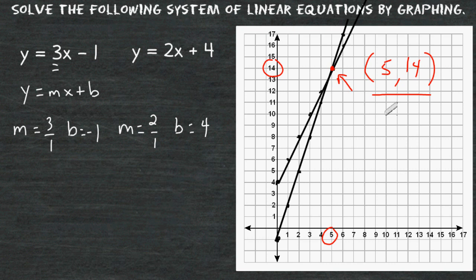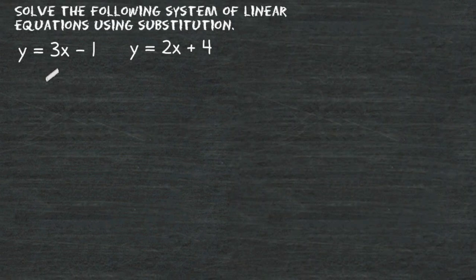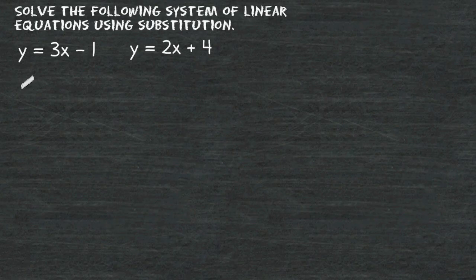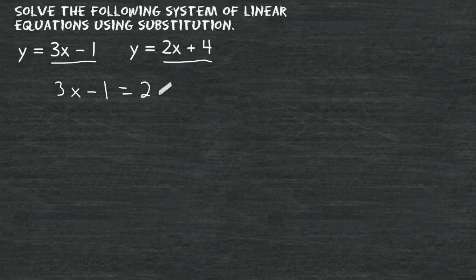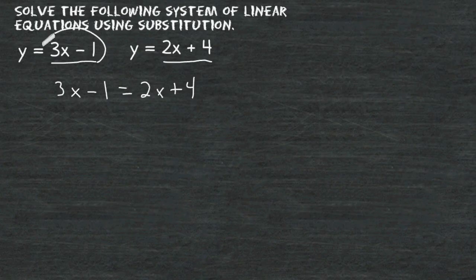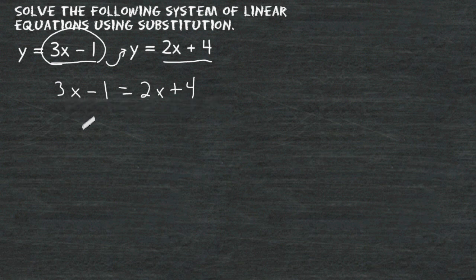Now let's try solving the same system of equations using the substitution method. When using substitution, what you want to do is isolate one of your variables. Notice that with both of these equations, the y is already isolated because they are already in y equals mx plus b form. If both equations are in slope-intercept form, you can take everything after the equal sign for both equations and set them equal to each other. So we write 3x minus 1 equal to 2x plus 4, because y is equal to 3x minus 1 — we substituted y with 3x minus 1, giving us only one variable to solve.